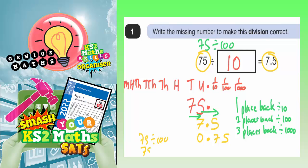If we had 75 divided by 1,000, the digits would move an extra place back. So the 7 would go into this column, the 5 would go into the thousandths column, and obviously we'd have a decimal point there. You can't just leave these empty gaps, so you'd put a 0 in there to fill the empty gap and a 0 in there to fill that empty gap.